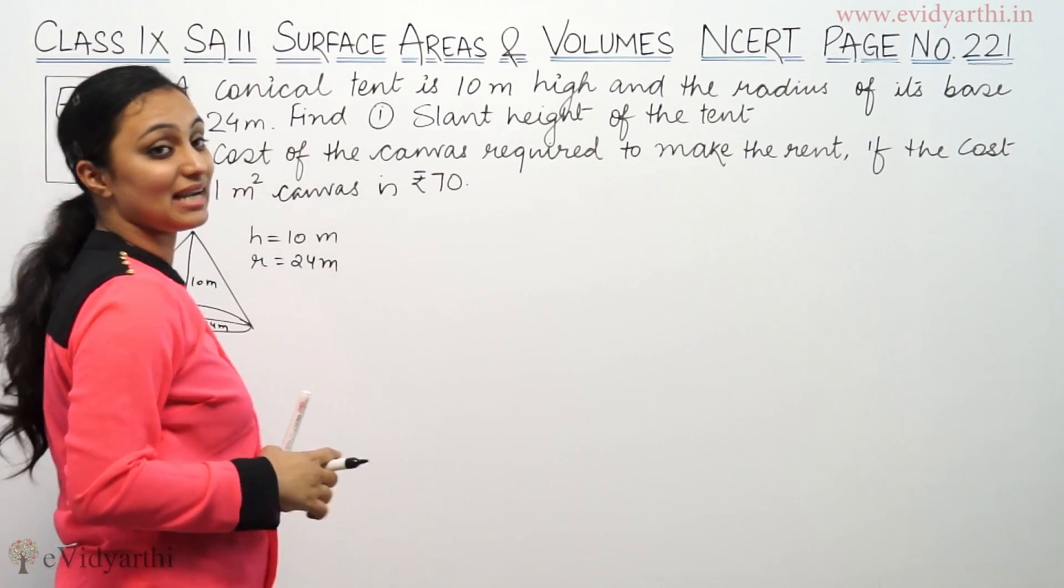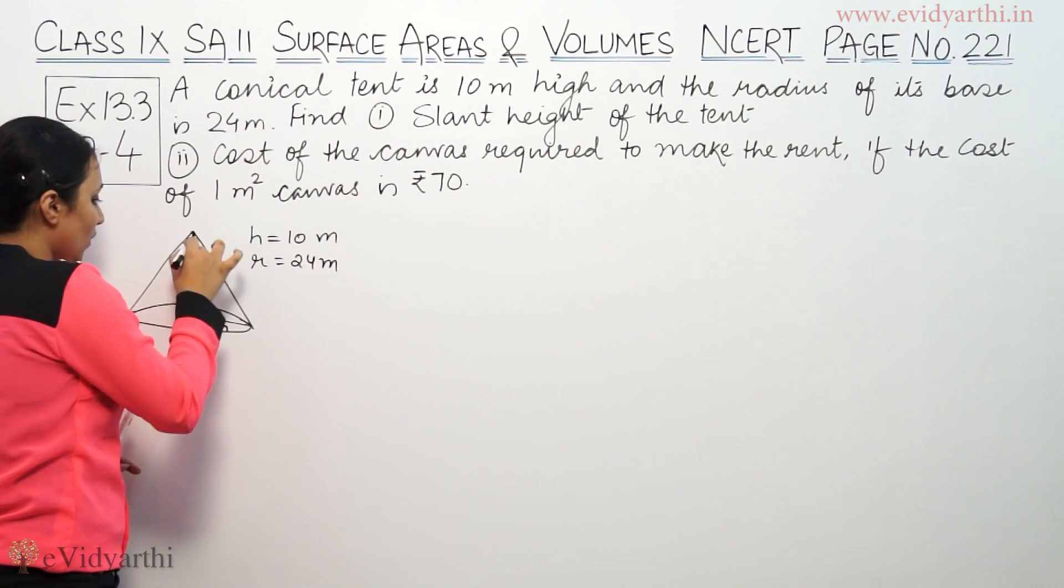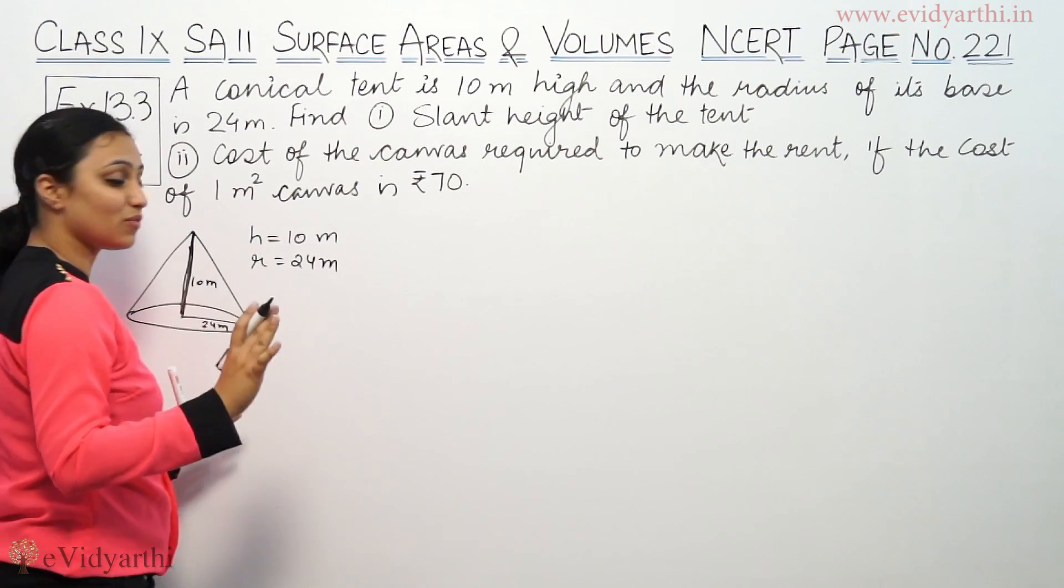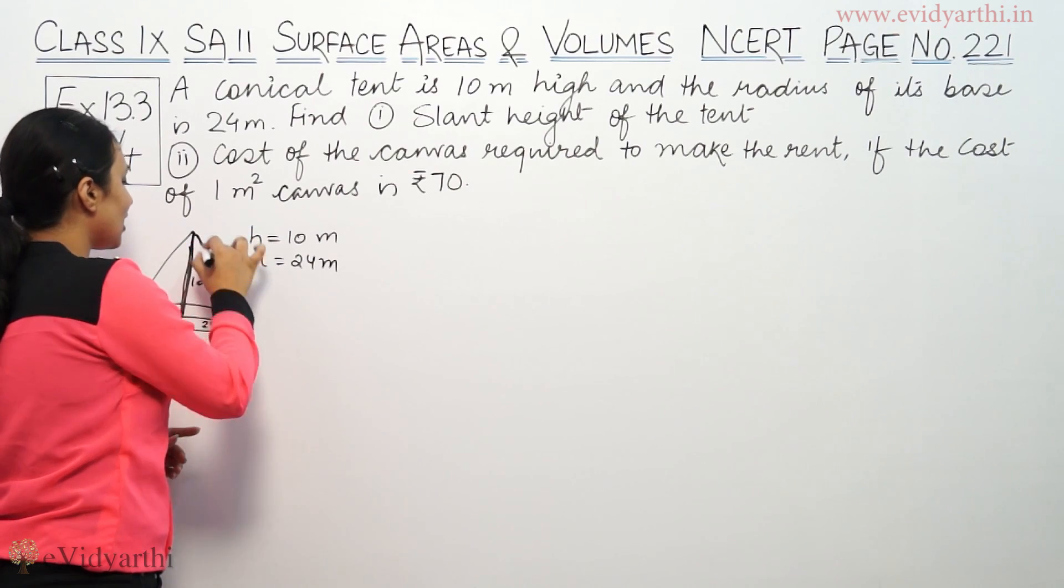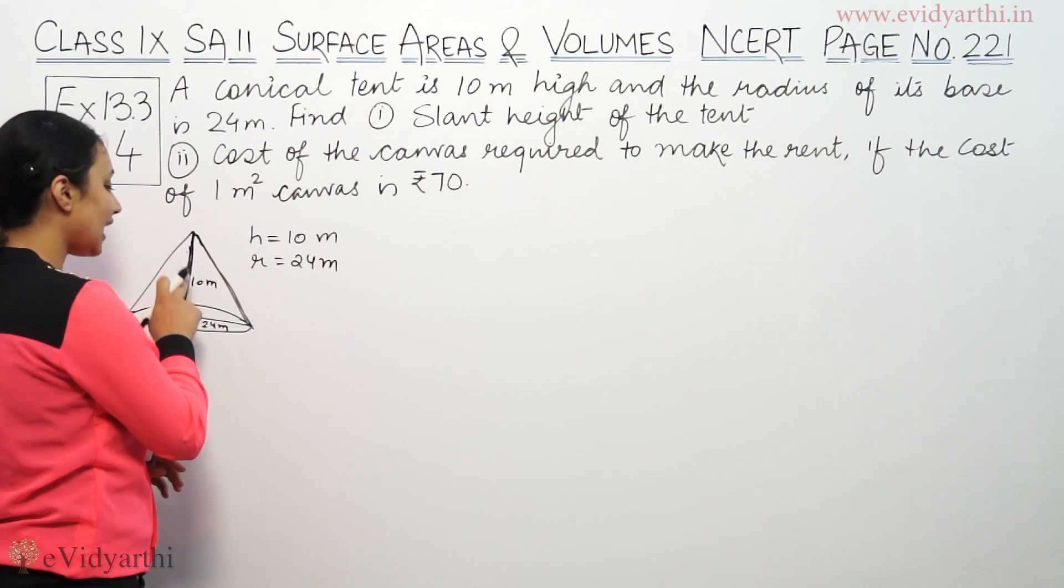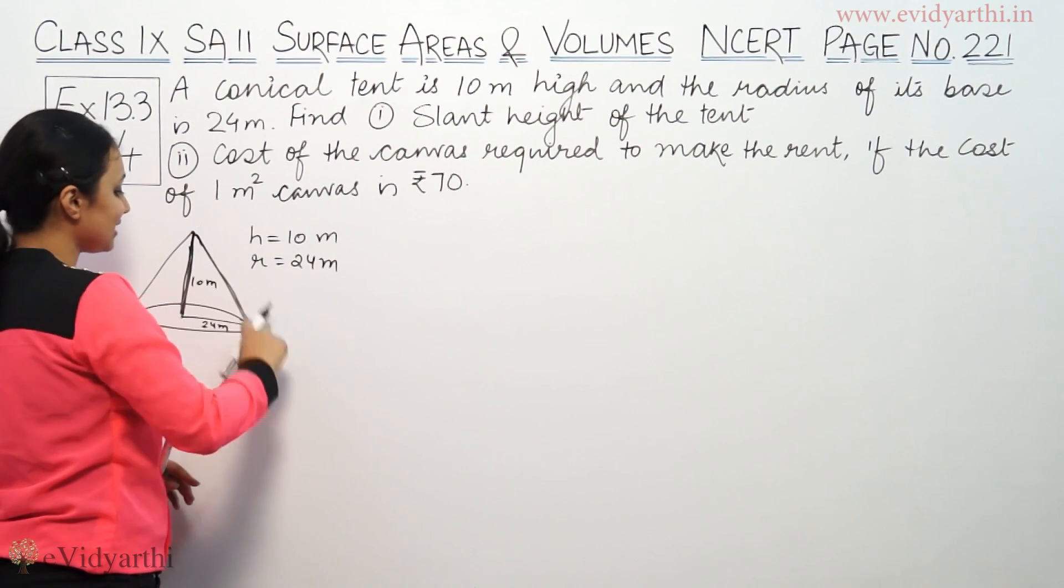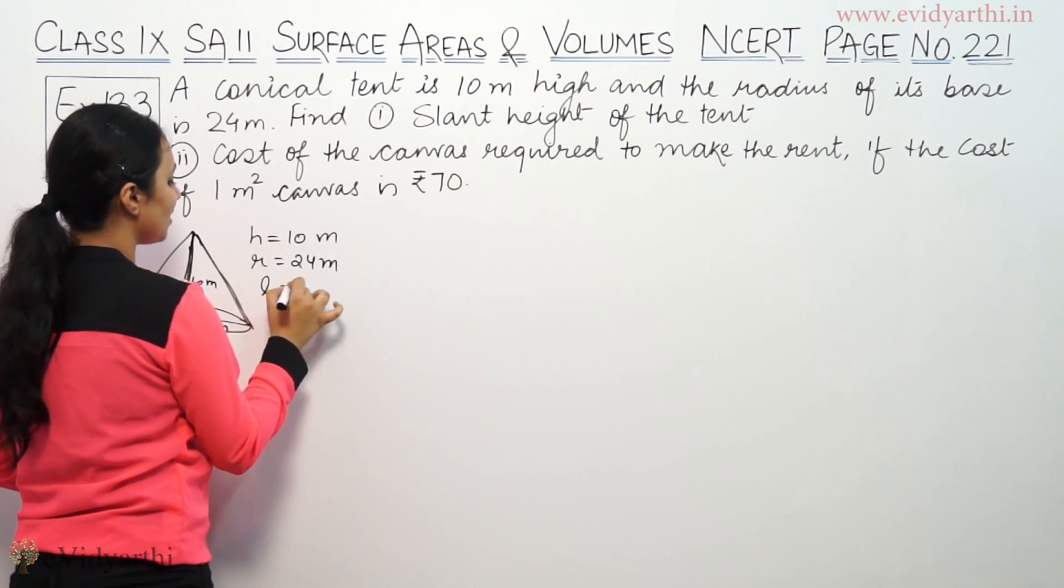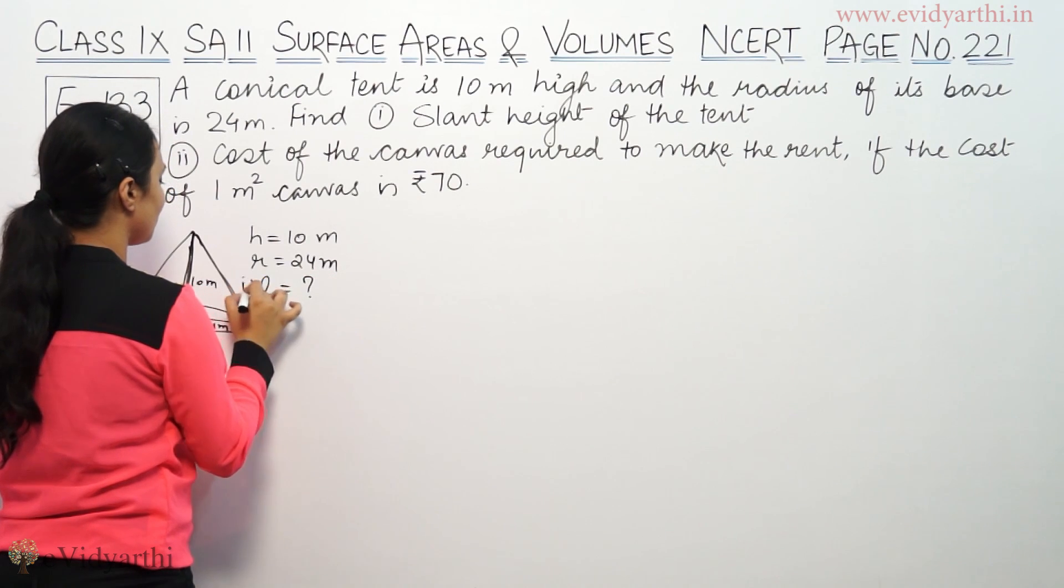Part A: Find its slant height. This is the vertical height here, but slant height refers to this side. This is the first part.